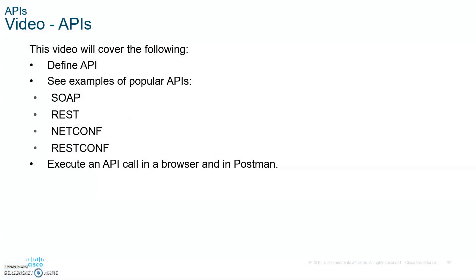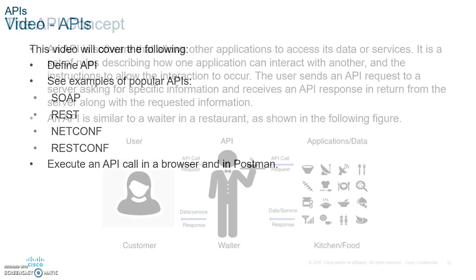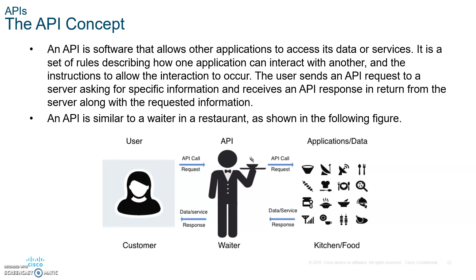Now let's talk about APIs. An API is software that allows other applications to access its data or services. It is a set of rules describing how one application can interact with another and the instructions to allow those interactions to occur. For example, if you want to write an app for Android, Google — which owns Android — will give you an API, an Application Programming Interface, and you'll use that to make it work with their operating system.